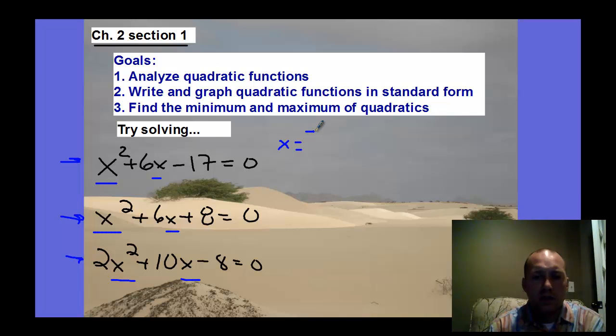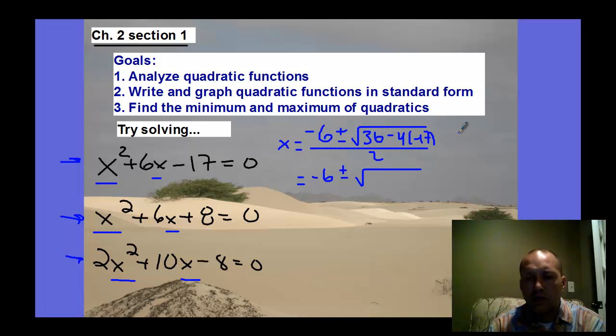The quadratic formula would be x equals negative b, which is negative 6, plus or minus the square root of b squared. That's 36 minus 4 times our a value, which is 1, so it doesn't change anything, times c, which is negative 17. All over double a. So that's 2. And so if we simplify this, we have negative 6 plus or minus the square root of, so this is going to be 36 plus, and negative to negative is positive, and 4 times 17 is 68. If I add that, I get 104 all over 2.